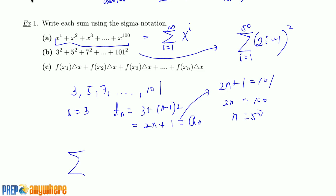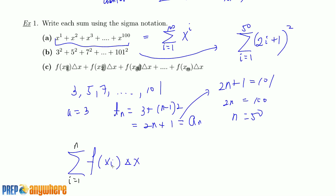For the next example, f and Δx do not change. You have to identify what's changing — it's the counter: 1, 2, 3, right up to n. So the sum goes from 1 to n. The things that don't change are f and Δx, and the changing part is xᵢ.